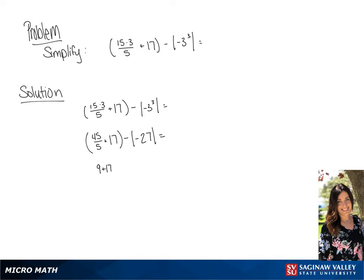We can simplify what's in the parentheses further, so we get 9 plus 17, which is 26. And if we simplify the absolute value of negative 27, we get 27. So we end up with 26 minus 27, and we get an answer of negative 1.